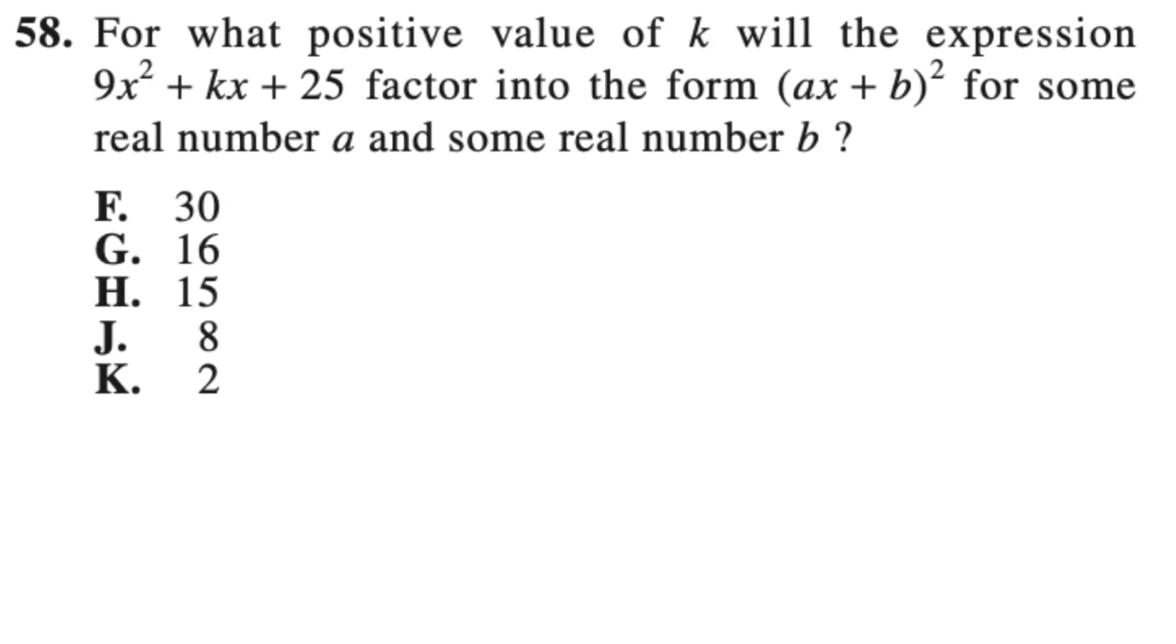Moving on to the final question that I want to talk about today. For what positive value of K will the expression 9x squared plus Kx plus 25 factor into form Ax plus B squared for some real number A or some real number B? The trick to this question is knowing Ax plus B. Since Ax plus B squared has to foil into 9x squared plus something x plus 25, we know for sure that both A and B have to be 3 and 5 respectively. So we can plug that in for Ax plus B to get 3x plus 5 squared. And now you foil like normal. And you get 9x squared plus 30x plus 25. So K is just equal to 30 or F.